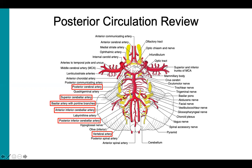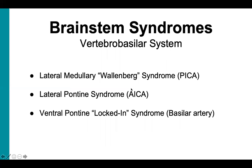The basilar artery will give off the anterior inferior cerebellar artery, or AICA, and the superior cerebellar artery before bifurcating at the base of the brain to form the right and left posterior cerebral arteries. The posterior cerebral arteries will complete the circle of Willis by joining the anterior circulation via the posterior communicating arteries. Note that the vertebral and basilar arteries and their branches make up the vertebrobasilar system, and we're going to start by covering three common brainstem syndromes of this system.